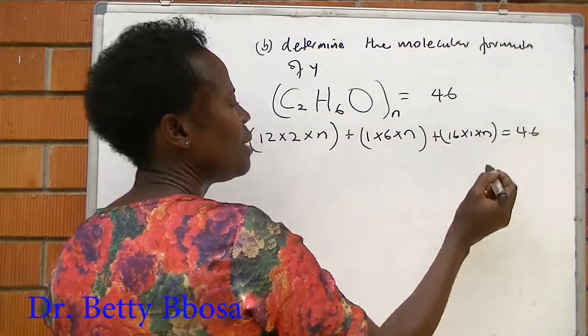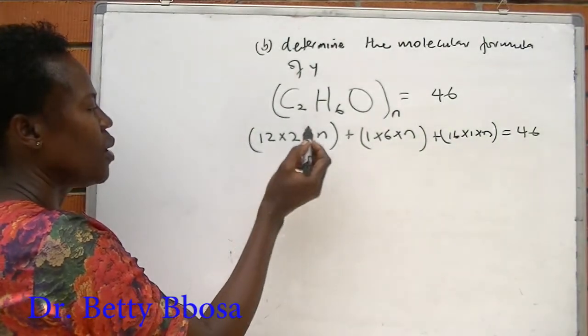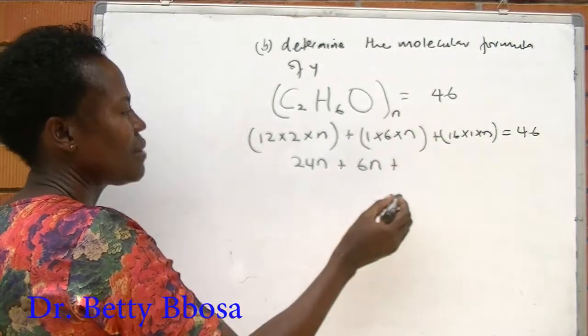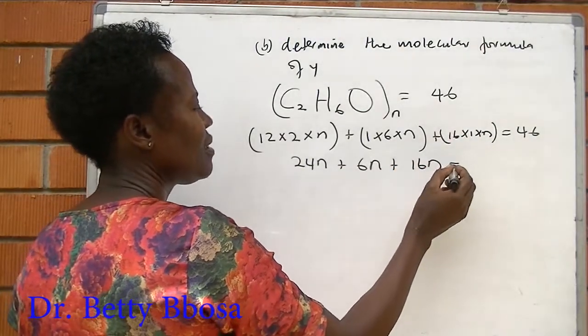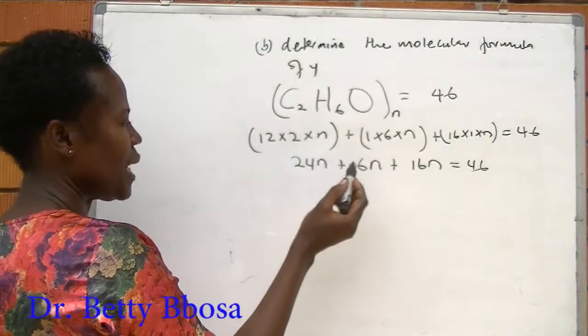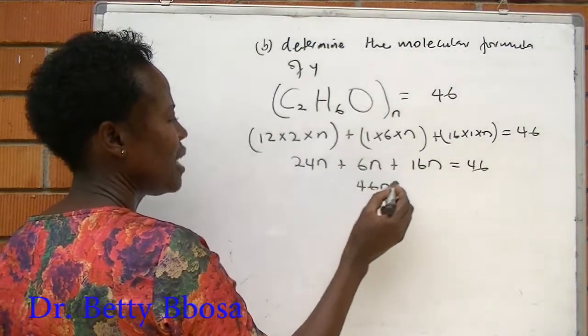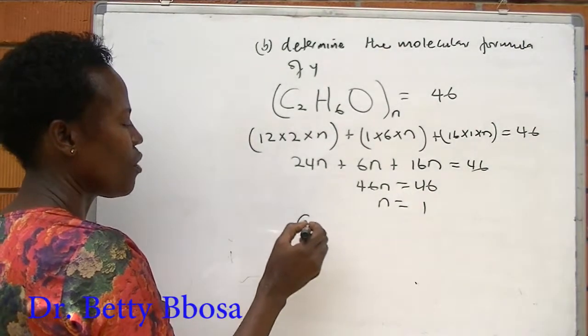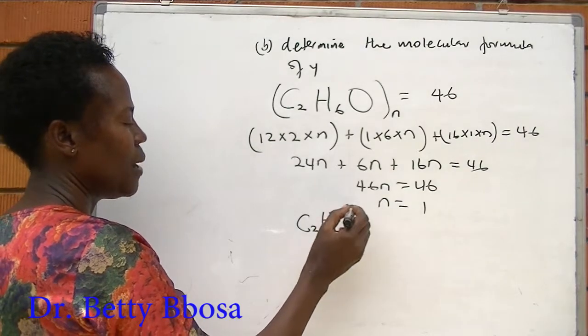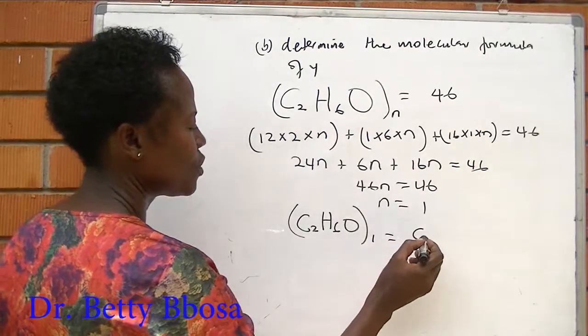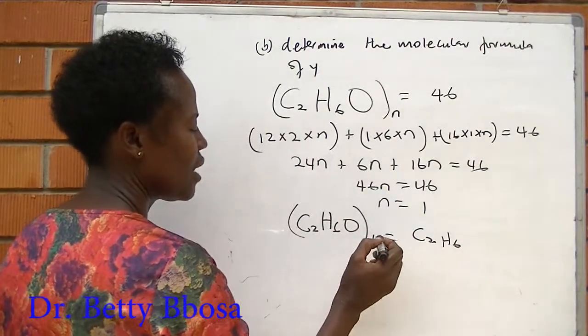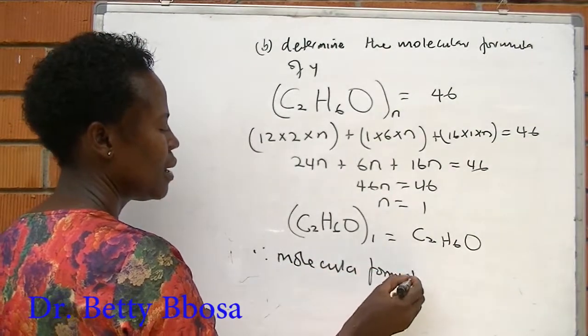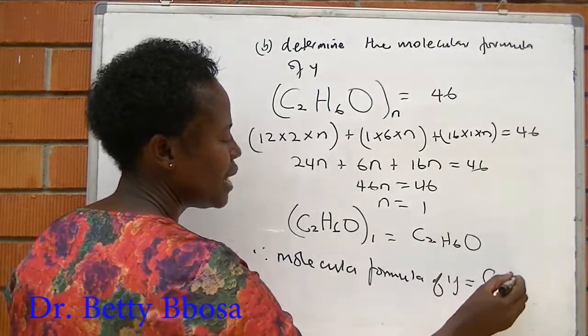All these should add up to the molecular mass. This is 12 times 2 is 24, times N, is 24N, plus 1 times 6 is 6, times N is 6N, plus 16 times 1 times N is 16N, equals 46. 24N plus 6N plus 16N equals 46N equals 46. N equals 1. Now you bring this value obtained on the empirical formula to calculate the molecular formula. Instead of N, since N is 1, 1 times 2 equals 2, 1 times 6 equals 6, and 1 times 1 equals 1. Therefore, the molecular formula of Y is equal to C2H6O1.